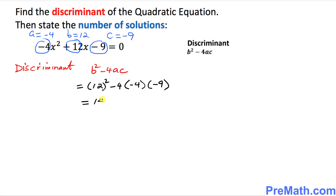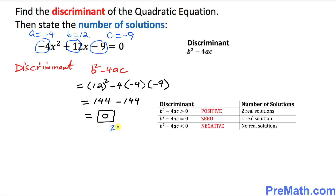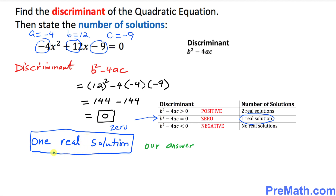Simplifying: that becomes 144, and when you multiply the remaining terms out you also get 144. So the discriminant value is zero. Whenever the discriminant is zero, we have exactly one real solution. So our answer is one real solution.